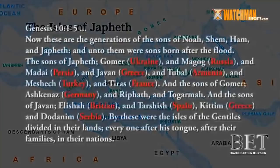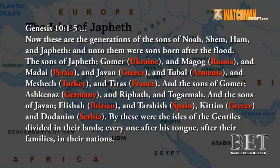What surrounding islands are they referring to? Chapter 10 — Now these are the generations of the sons of Noah: Shem, Ham, and Japheth, and unto them were sons born after the flood.